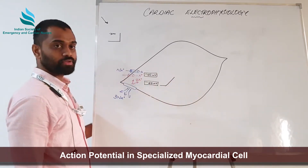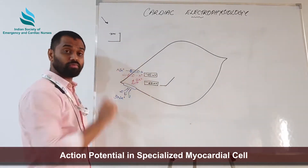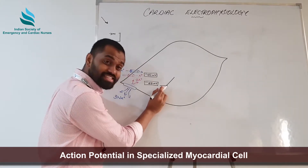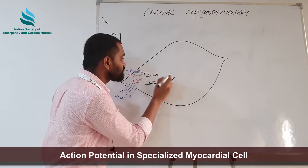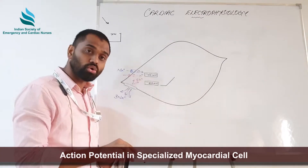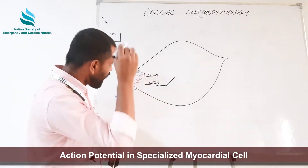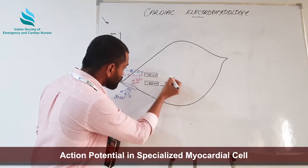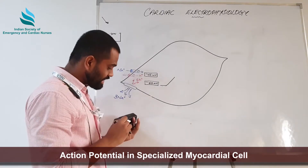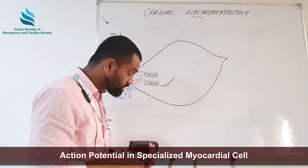In the SA node, from minus 60 millivolts it slowly rises and touches minus 45 millivolts, which is the threshold potential for the SA nodal cell. As the electrical potential touches the landmark of minus 45 millivolts, suddenly the voltage-gated calcium channels open in the SA node.